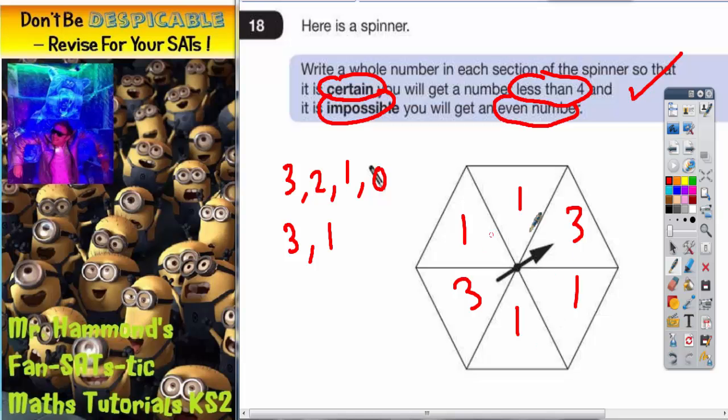Is it impossible to get an even number on that spinner? Yes it is, because there are no even numbers. So that clue works, so our answer must be correct. Ones and threes will make it work.